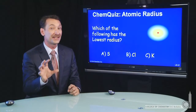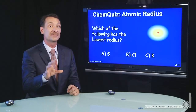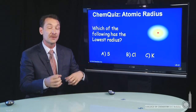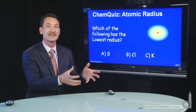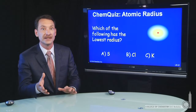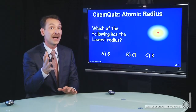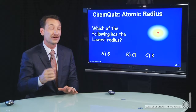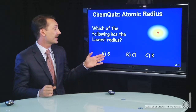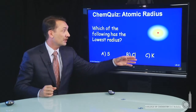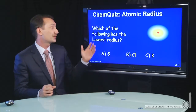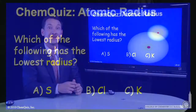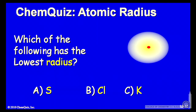Let's see if we can deduce an atomic radius from the information we have so far. We haven't really talked about the trend in atomic radius — we've talked about ionization energy and electron affinity. But you might be able to surmise how the atoms go based on our other atomic trends. So let's take sulfur, chlorine, and potassium, and ask: which has the lowest atomic radius? Think about that for a minute and make a selection.